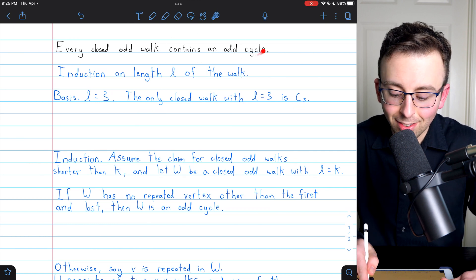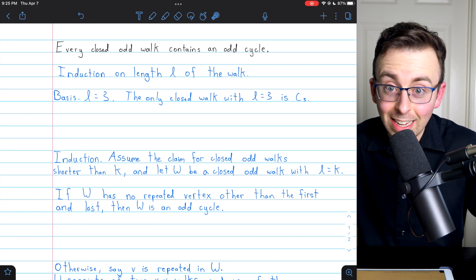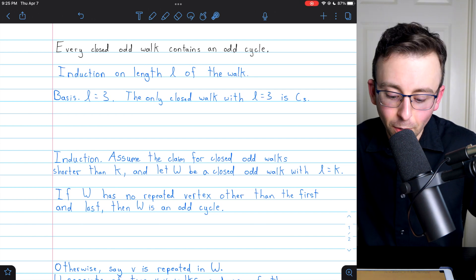Which obviously contains an odd cycle because it is an odd cycle. Quickly, let's go over why is this the only closed odd walk of length three?